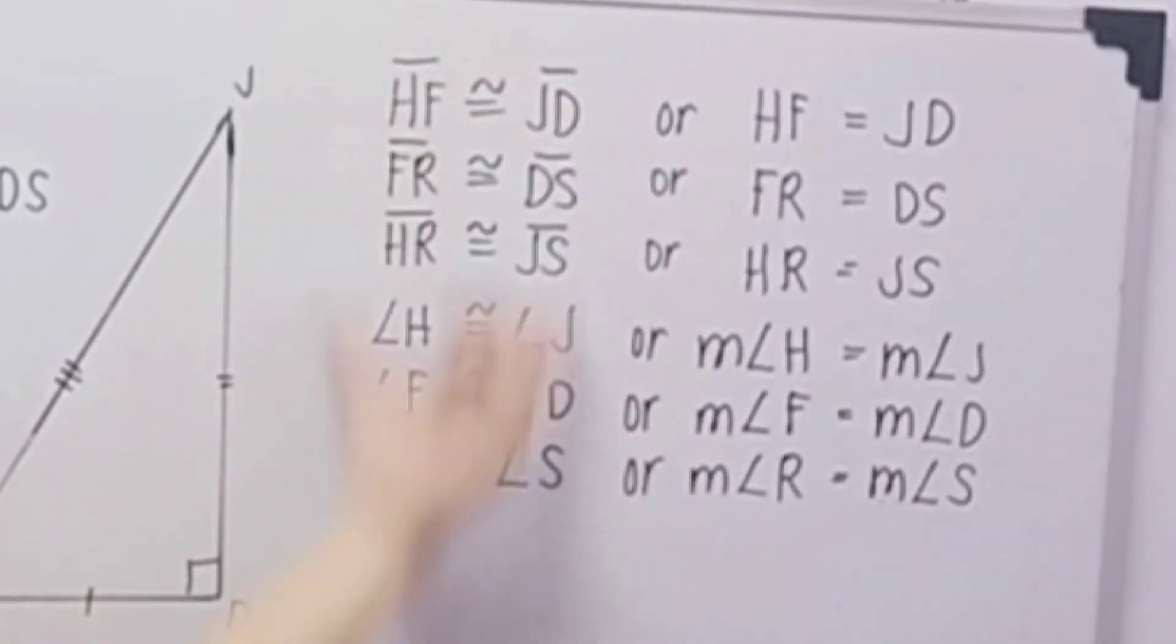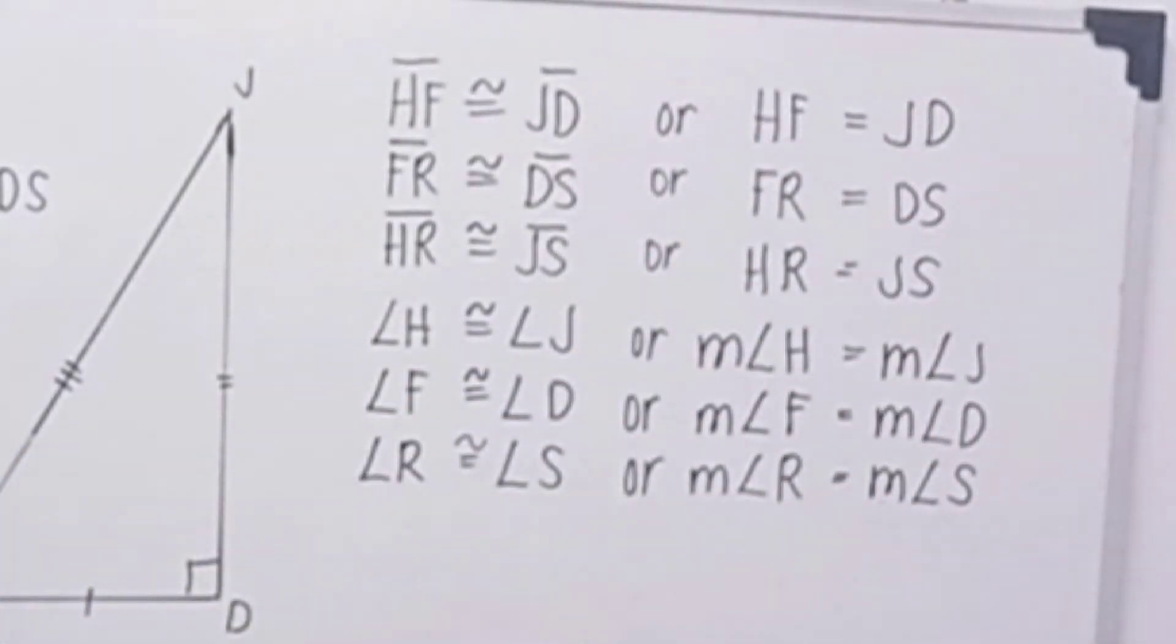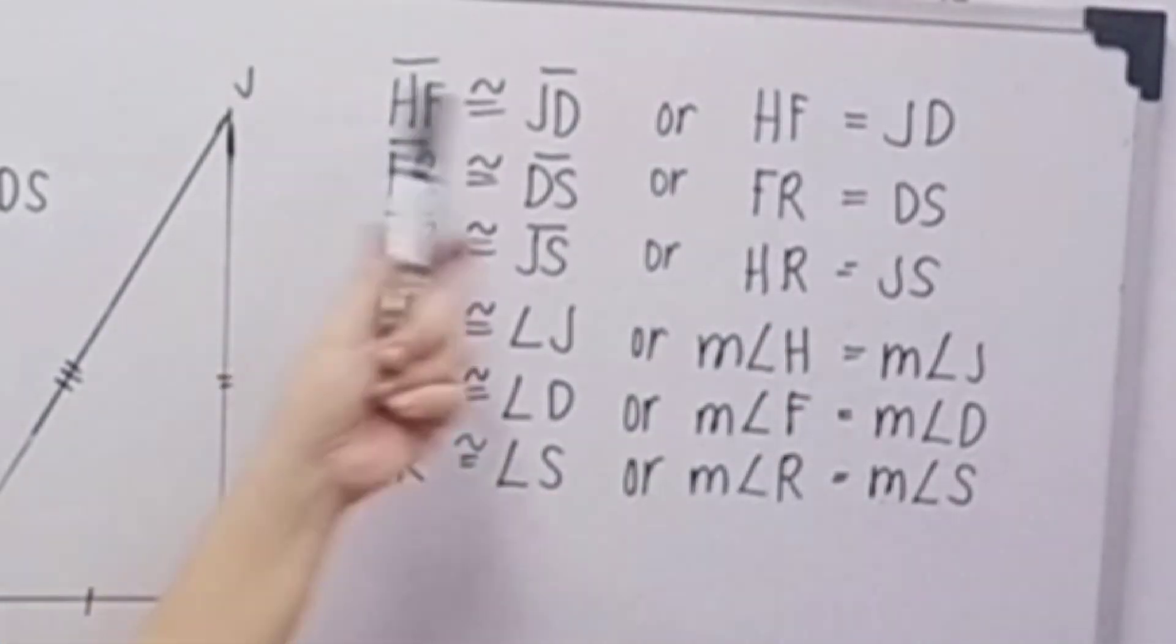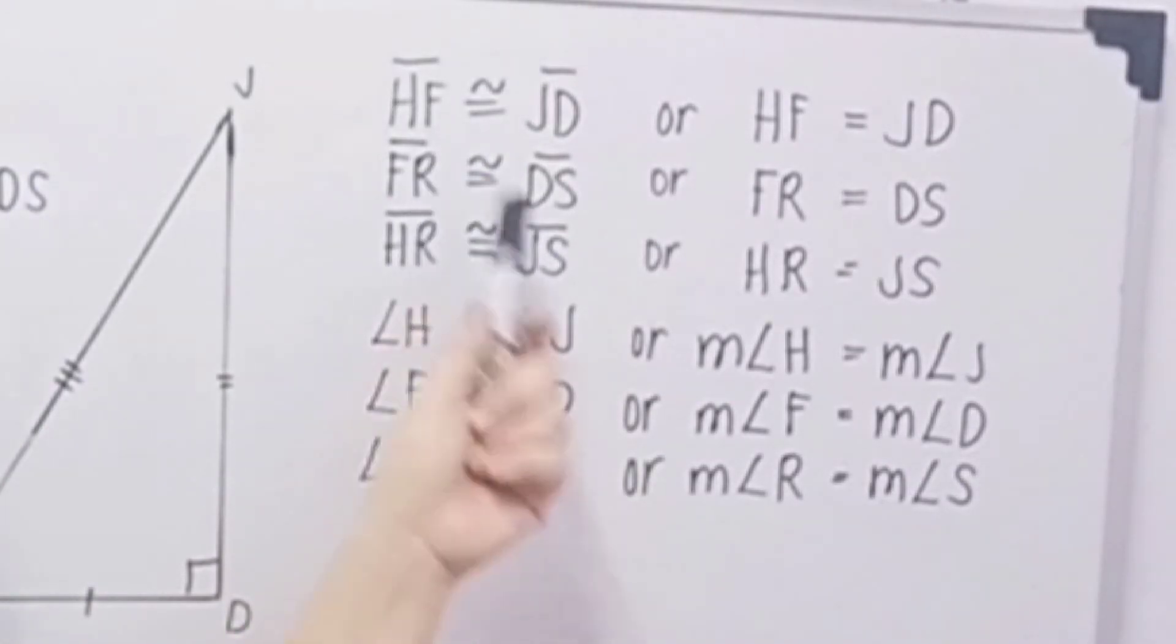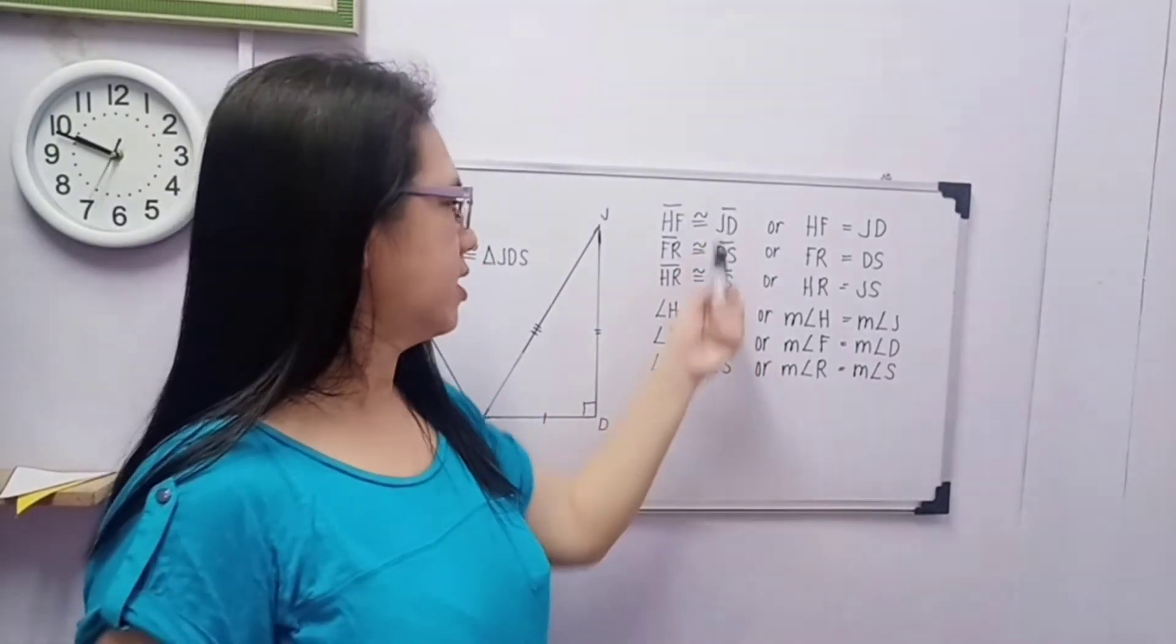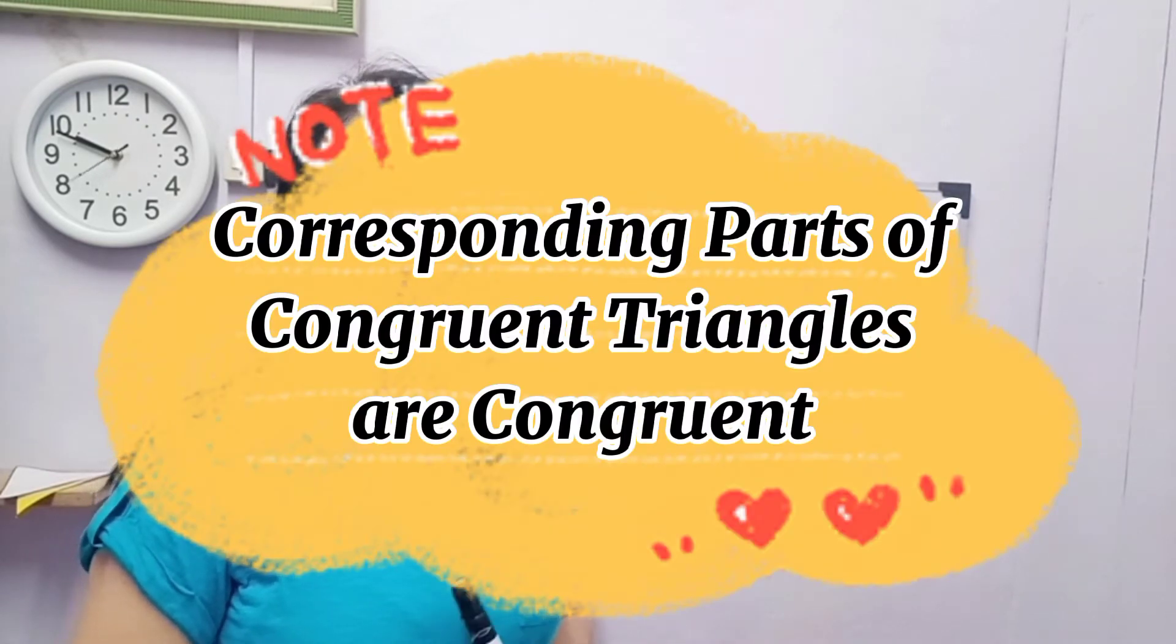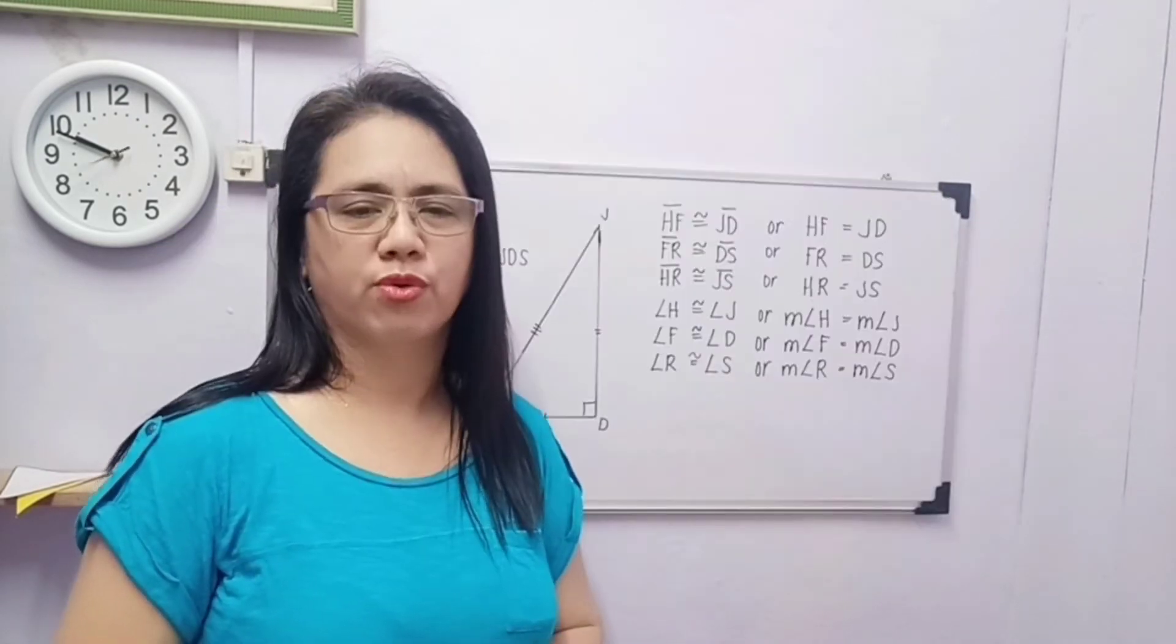Sa mga statements na nakikita ninyo, itong nasa left side ay pareho lang ng nasa right side. Pwede nating isulat in this form or pwede rin naman nating isulat in this form. We use the equal symbol if we are referring to a measure or a length. While the congruent symbol if we are talking about the shape and size of a figure. So itong 6 statements na ito ay ang tinatawag na corresponding parts of congruent triangles are congruent.